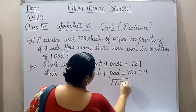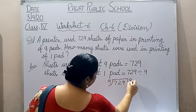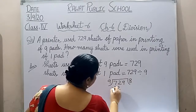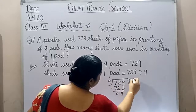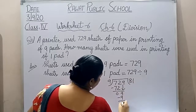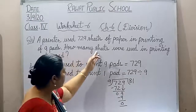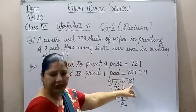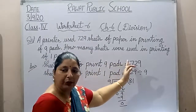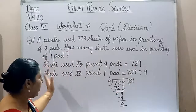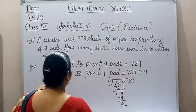729 divided by 9. In the table of 9: 9 eights are 72, remainder zero. Then bring down 9. Nine nines are 81. So for printing one pet, 81 sheets are used. The printer used 729 sheets for nine pets, so for one pet we need 81 sheets.